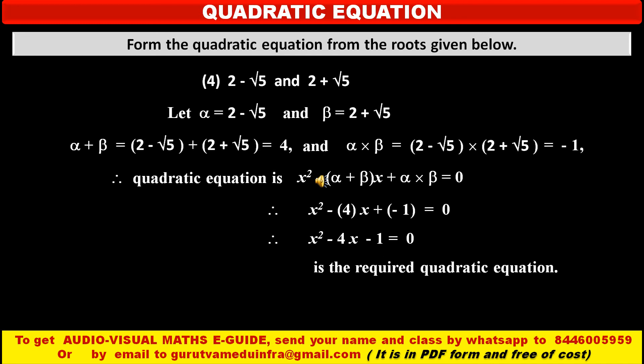Therefore, the quadratic equation using the formula x squared minus, alpha plus beta, into x, plus alpha into beta, equals 0, and substituting sum of the roots as 4 and product of the roots as minus 1, we get x squared minus 4x plus minus 1 equals 0. So x squared minus 4x minus 1 equals 0. This is the required quadratic equation.